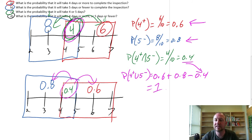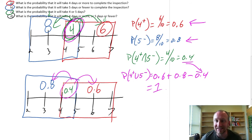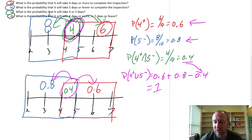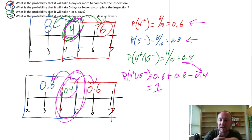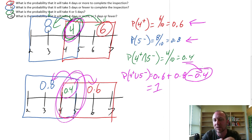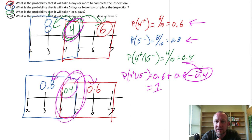Here we can see that these two events are exhaustive of the probability space — there's a 100% chance, given this information, that it will take 4 days or more or 5 days or fewer. That's the addition law. When events are not mutually exclusive, meaning there's an intersection, we subtract out that intersection to avoid double counting. Without subtracting, we'd have had 1.4, and probabilities cannot exceed 1.